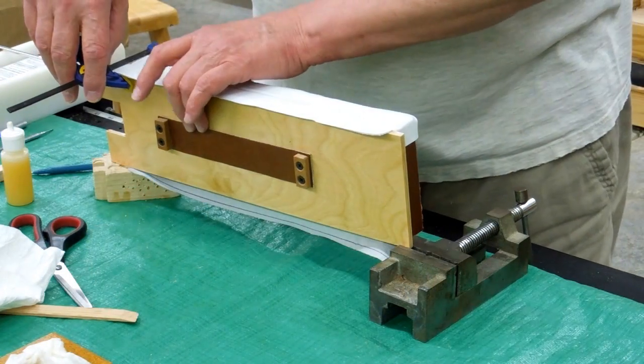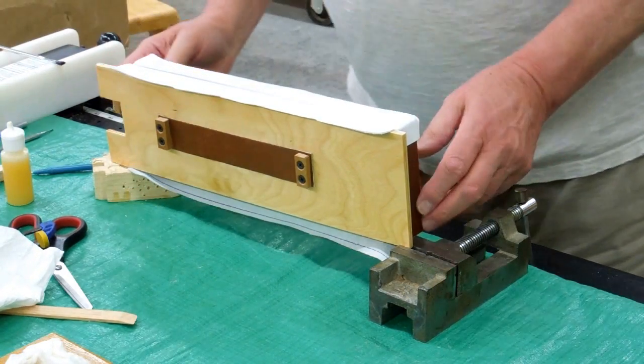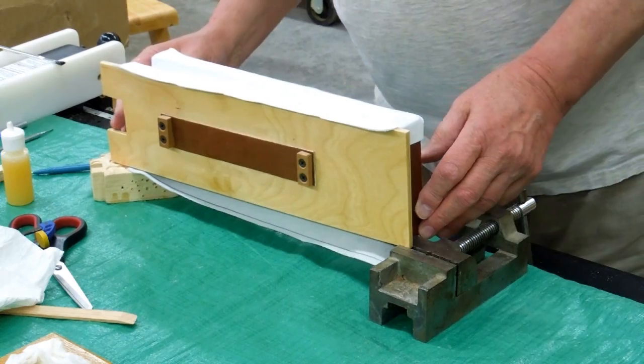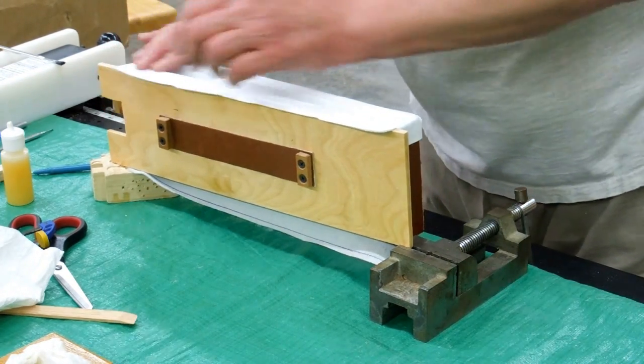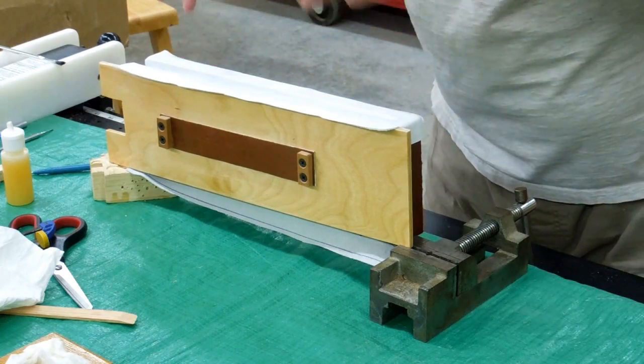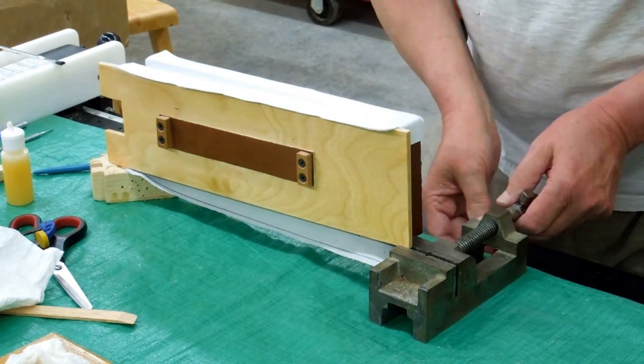When you get done covering this, take your clamp off. Make sure that the bellows don't pull on it because these glue joints are still green. You just want to make sure you haven't glued the whole thing together accidentally somehow.